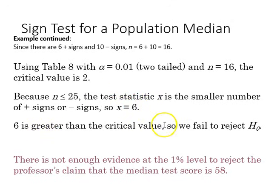Six is greater than the critical value, so we fail to reject H0. Therefore, based on the evidence we have, there's not enough evidence at the 1% level to reject the claim that the median test score is 58.